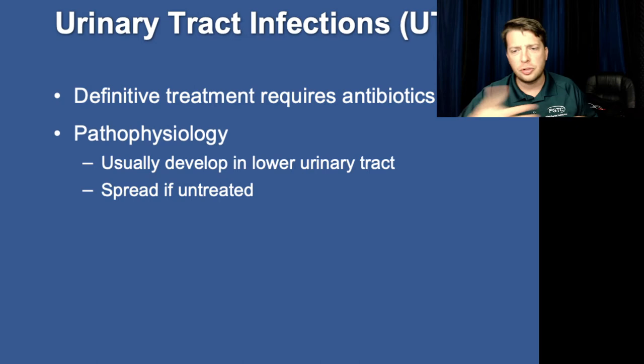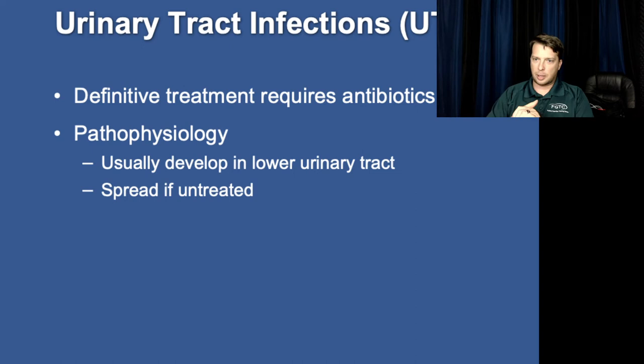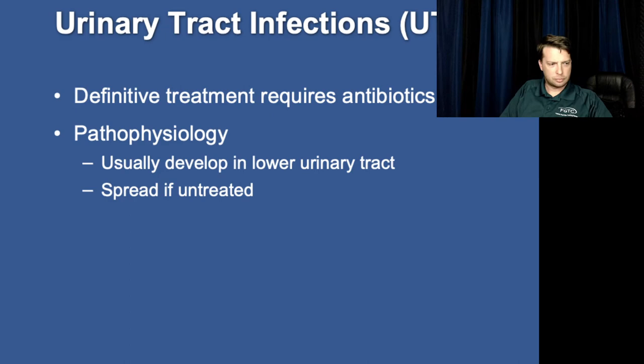UTIs are probably the most common renal condition that we're going to deal with. Urinary tract infections can be anything from an infection in the urethra or the bladder all the way up to the kidney itself. Generally we look at the lower urinary tract — it starts there and then spreads. Which patient population is at greater risk or likelihood for a UTI?